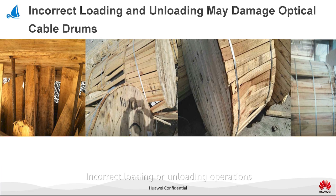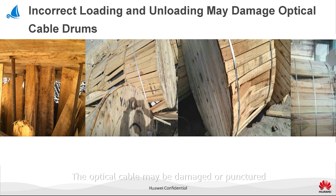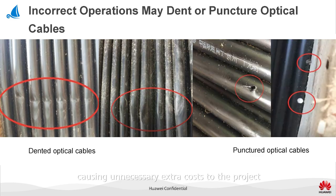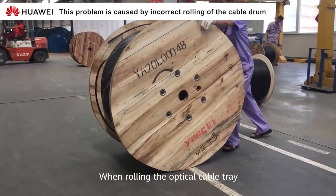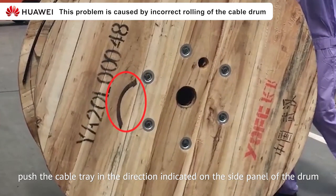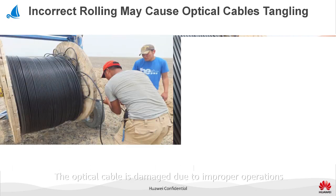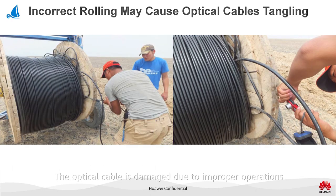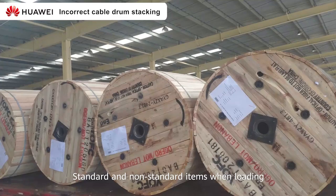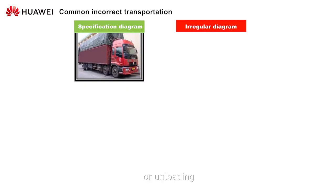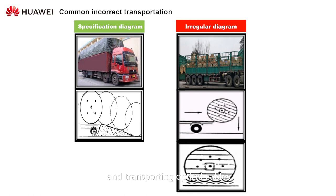Incorrect loading or unloading operations may cause damage to the optical cable tray. The optical cable may be damaged or punctured by a hard object, scratching, etc., causing unnecessary extra cost to the project and time delay. When rolling the optical cable tray, push it in the direction indicated on the side panel of the drum. Optical cable is damaged due to improper operations.